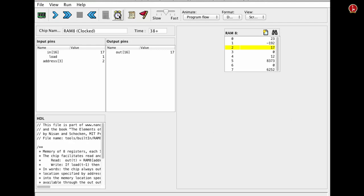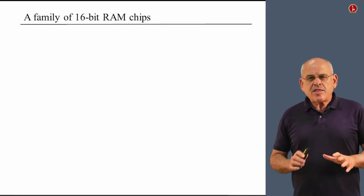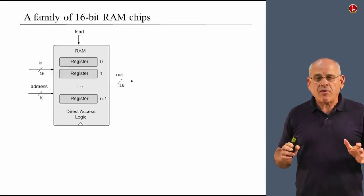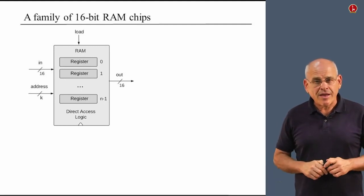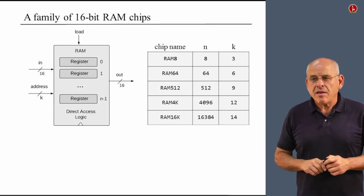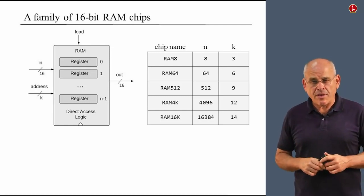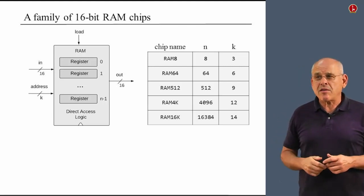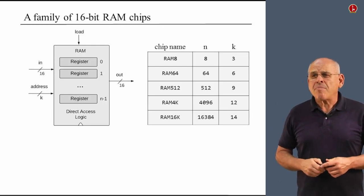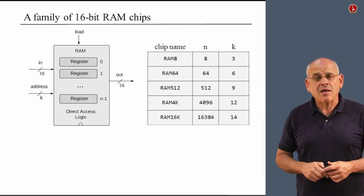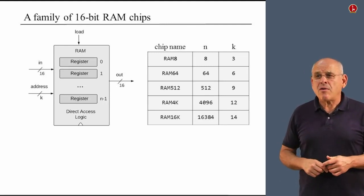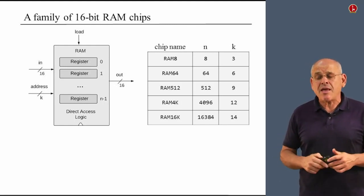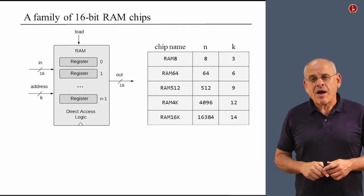This has been a demonstration of how a RAM unit operates. In this course, we are going to build a family of 16-bit RAM chips, all with the same generic architecture but differing in size: RAM8 (8 registers, 3 address bits), RAM64 (64 registers, 6 bits), RAM512 (half-K registers), RAM4K, and RAM16K — which is what we finally need for our Hack computer platform.